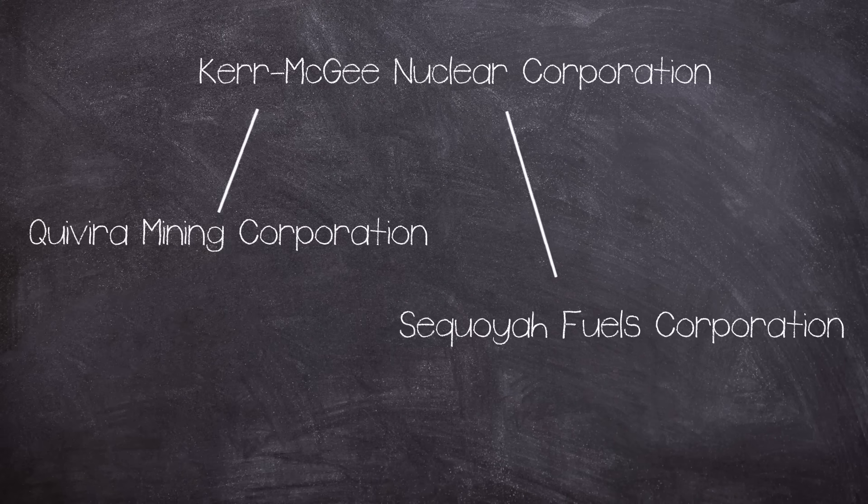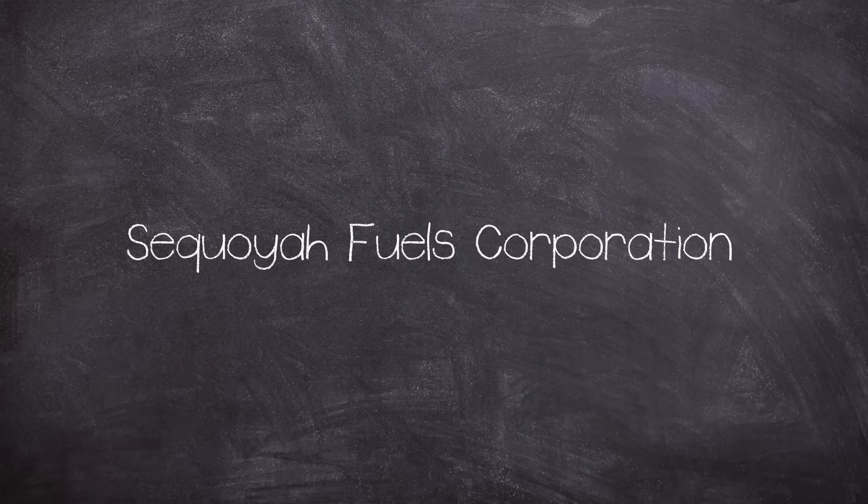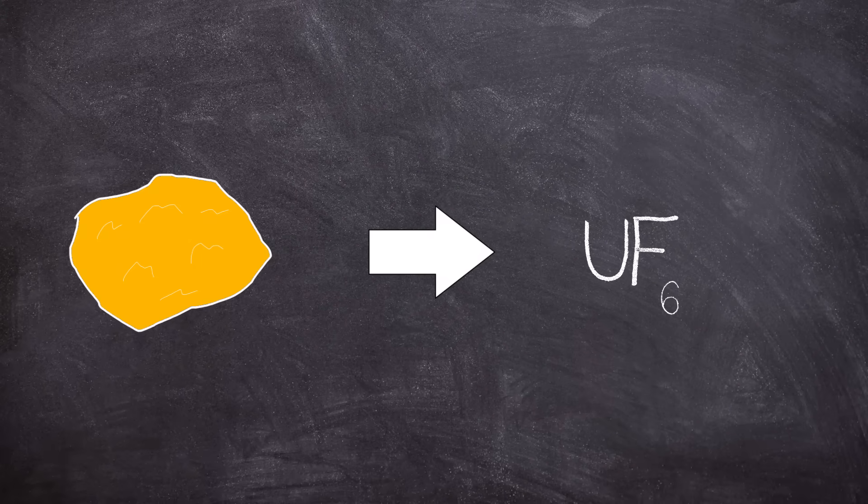One of them, Sequoia Fuels Corporation, would be responsible for owning and operating the site. The process in its most basic explanation is yellowcake in, uranium hexafluoride out. But we will want to have a look in a little more detail.